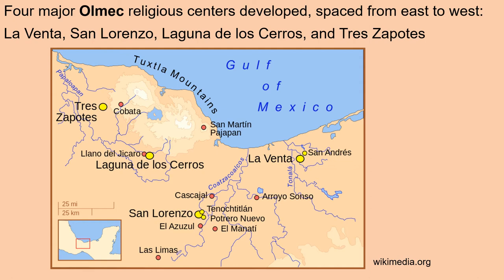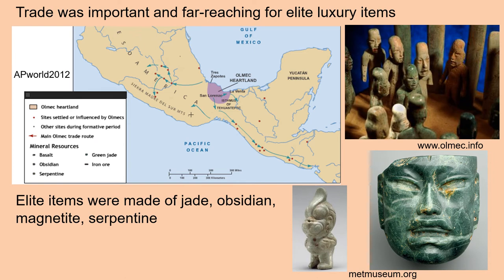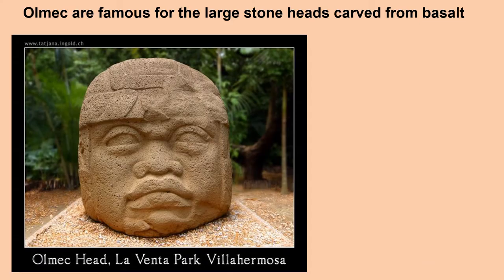Four major Olmec religious centers developed, spaced from east to west: La Venta at the east, San Lorenzo in the center, Laguna de las Serras a little bit further west, and Tres Zapotes at the far west. Trade was important and far-reaching for elite luxury items, and this map shows some of the main Olmec trade routes. Elite items were made of jade, obsidian, magnetite, and serpentine.